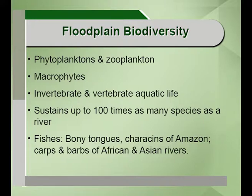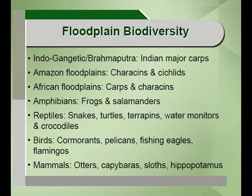The floodplains sustain more than 100 times the species diversity when compared to a river or a stream. The types of fishes found here include the bony tongues and the caracans of the Amazon — the Amazon floodplain ecosystems are one of the largest systems — and the carps and barbs of the African and Asian rivers. Floodplain biodiversity is mainly found in three places: the Indo-Gangetic or Brahmaputra floodplain with major Indian carps, the Amazon floodplains with cichlids and caracans, and the African floodplains.